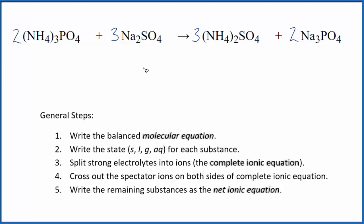Once we've done that, we can write the state for each substance. That looks like this. Compounds with the ammonium ion are very soluble. So these substances here, ammonium phosphate and ammonium sulfate, they're very soluble.